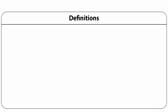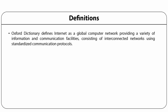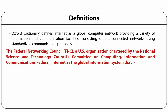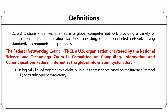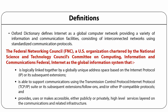Now let us see some of the definitions of internet. Oxford Dictionary defines internet as a global computer network providing a variety of information and communication facilities consisting of interconnected networks using standardized communication protocols. The Federal Networking Council (FNC), a US organization chartered by the National Science and Technology Council's Committee on Computing, Information and Communication, refers to the internet as the global information system that is logically linked together by a globally unique address space based on the internet protocol (IP) or its subsequent extensions. It supports communications using the transmission control protocol or internet protocol suite, and provides high-level services layered on the communications and related infrastructure.